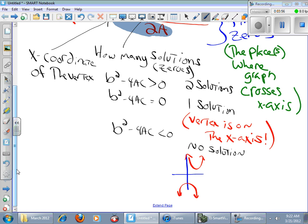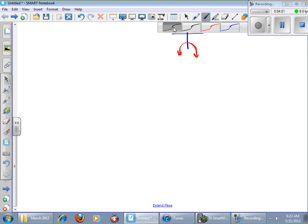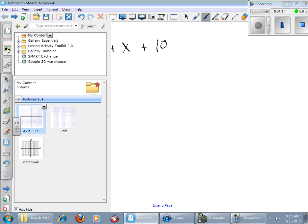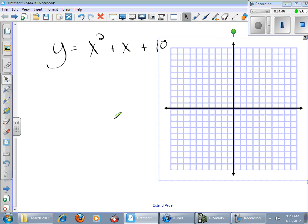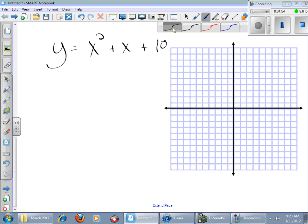Let's take a problem like this: y equals x squared plus x plus 10. I'm going to put my graph over here. The first thing I'm going to do is identify a, b, and c. Easy as 1, 1, 10.